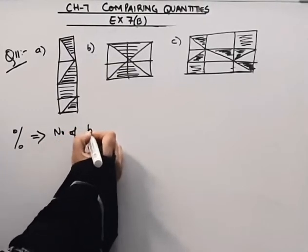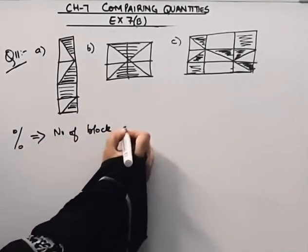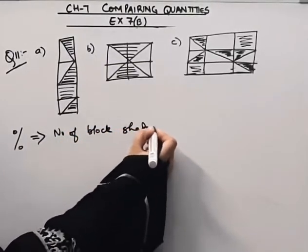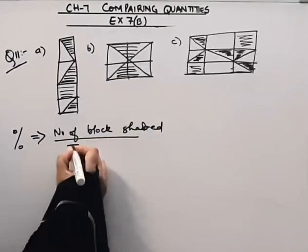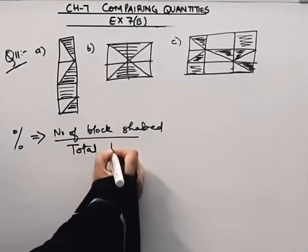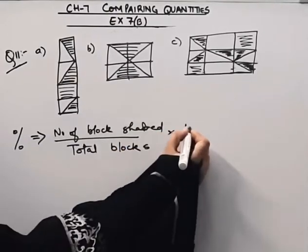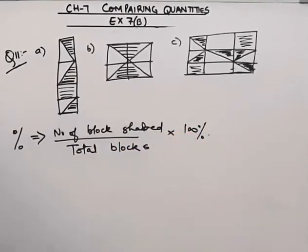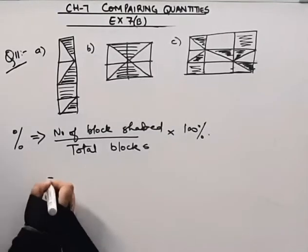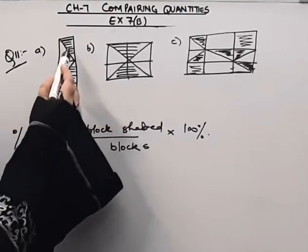Number of blocks shaded divided by total number of blocks, multiplied by 100 to get the percentage. So we have to see how many blocks there are.